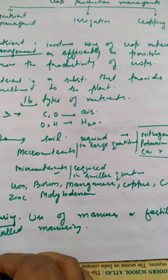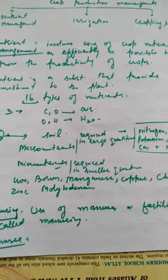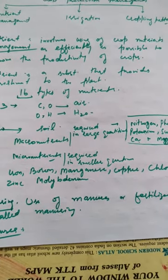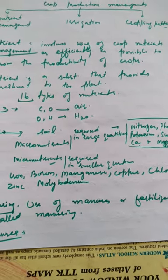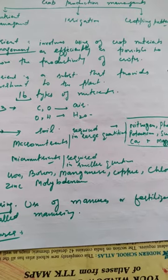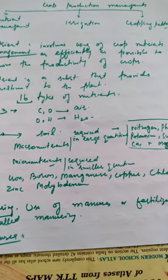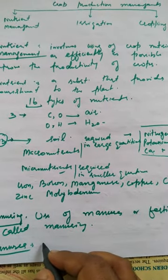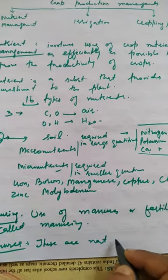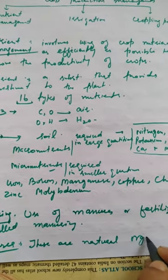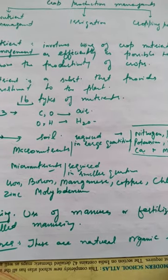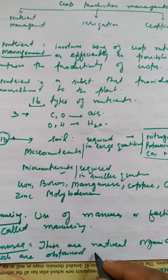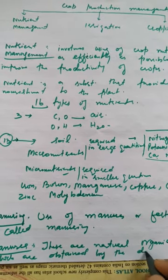Today's topic is manures, which are obtained by the decomposition of plant and animal wastes. Manures are natural organic substances obtained by the decomposition of plant and animal wastes.